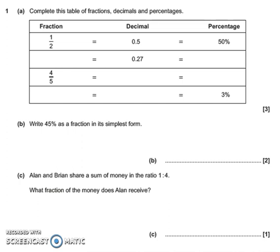So, 0.27 — we've got 0 units, but we've got 2 tenths and 7 hundredths. Now, a tenth is 10 hundredths, so in total we've got 27 hundredths. So that's our fraction: 27 over 100. And if I want to write that as a percentage — percentage means out of 100, and our fraction is already out of 100 — so it's nice and straightforward: it's just 27%.